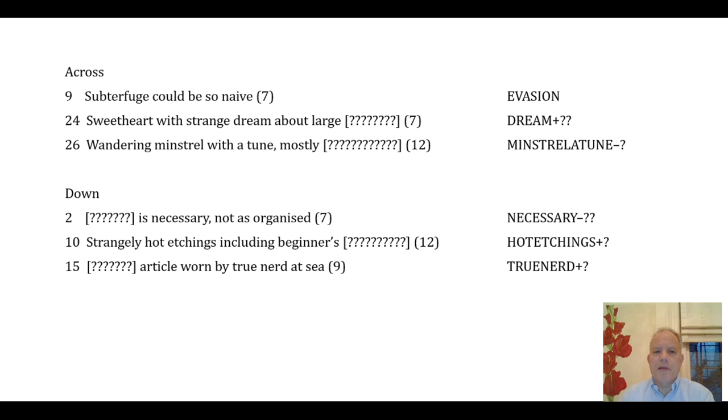In 24, now this is possibly the hardest one - 'sweetheart' I don't think this would be allowed in the Times, but sweetheart can mean the heart of the word 'sweet', and that's the letter E, that's the central letter there. 'Large' more obviously can be L, so those are the two letters to add there. 'Wandering minstrel with a tune, mostly' - mostly means not all the letters of 'tune', so you can take the last one off. In 2 down, fairly neatly, 'organized' is the anagram indicator, but what is organized is 'necessary not as', so we can remove the letters A-S. The beginner in 10 down - this is a bit of crossword ease - is L, like a learner driver. And in 15 down we need one extra letter, and the word we've got to indicate that is 'article'. A is the fairly neat anagram indicator there, so we're adding an A. So now these are the letters that we have to play with.